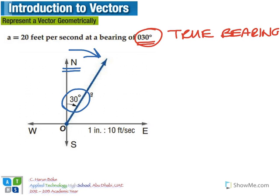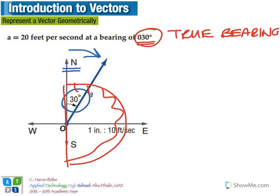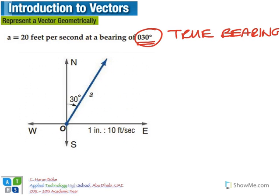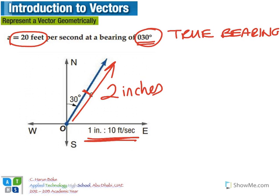We're going to use our protractor, placing it so that we measure 30 degrees from north, and draw our vector in that direction. When it comes to magnitude, we define a scale — here it is 1 inch for 10 feet per second. So a magnitude of 20 feet per second means we draw a 2-inch arrow.